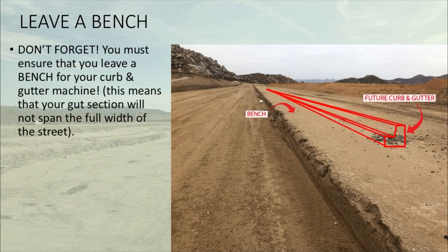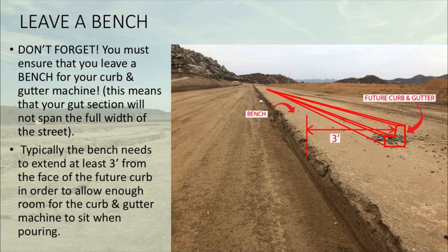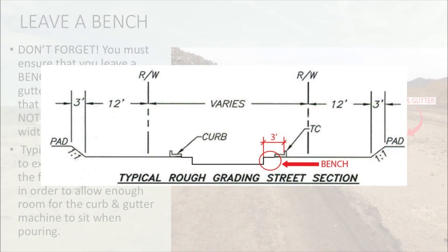Don't forget though that you must ensure that you leave a bench for your curb and gutter machine. What this means is that your gut section will not actually span the full width of the street. Typically the bench needs to extend at least three feet from the face of the future curb in order to allow enough room for the curb and gutter machine to sit when pouring. Here's another detailed example from a plan set showing what that bench looks like.